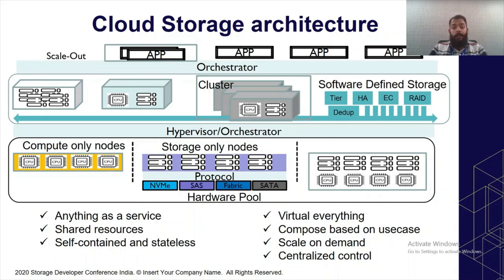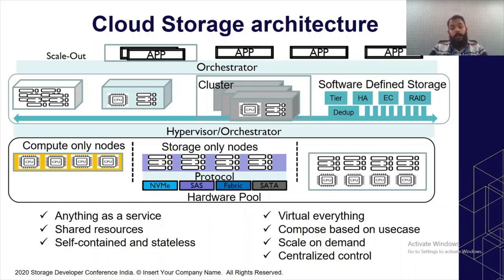Everything is virtualized — from storage virtualization like SR-IOV to computational virtualization like provisioning vCPUs and RAM. At any given time there is no single point of failure, so an application can move seamlessly from one underlying node to another in case of failure. Resources are composed based on use case — the application composes the underlying subsystem based on its needs — enabling scale on demand and centralized control using API services.